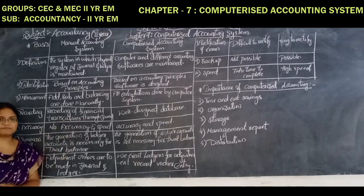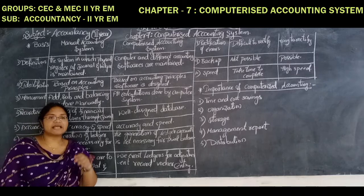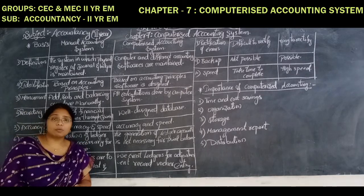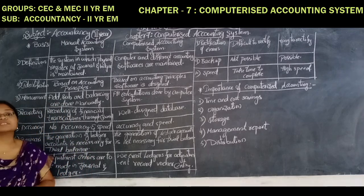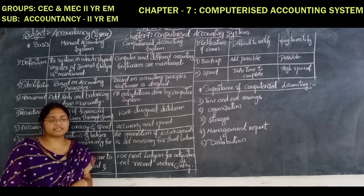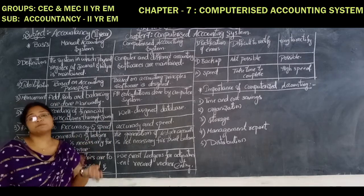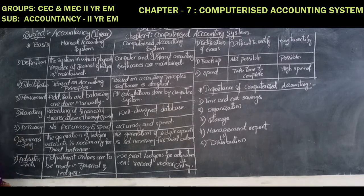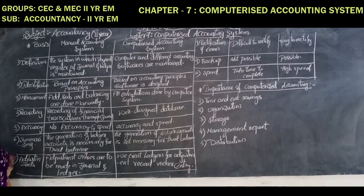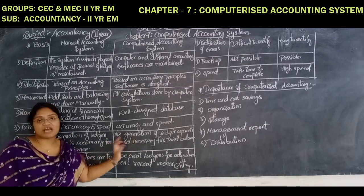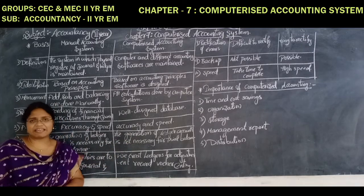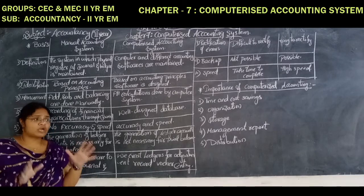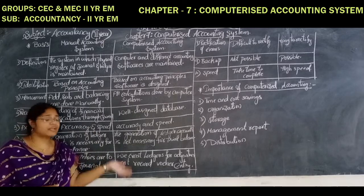Accuracy: in manual accounting, there will be chances of errors or omissions and the man will take more time to complete those financial tasks. Whereas in the computerized accounting system, there is a lot of accuracy and speed because we are installing one particular accounting software. Summarizing: in manual accounting, the generation of the ledger account is necessary for the trial balance. But in the computerized accounting system, there is no need of a ledger account to prepare the trial balance — we can go directly. It is completely based on the software; whatever software we are installing and what features it has, according to that.